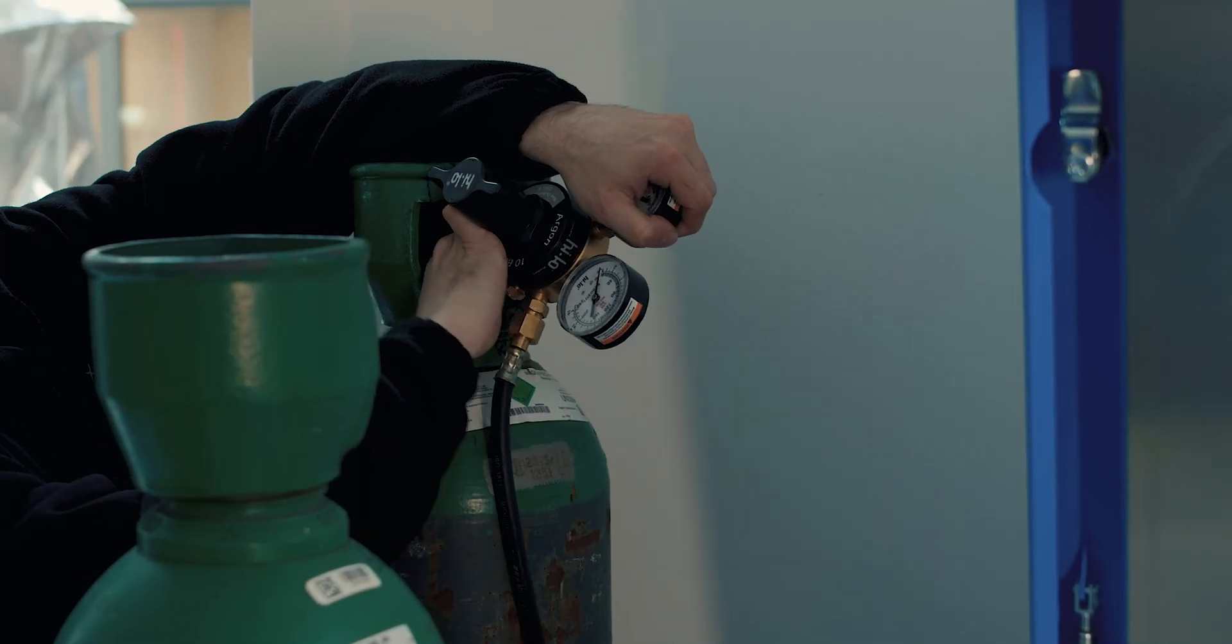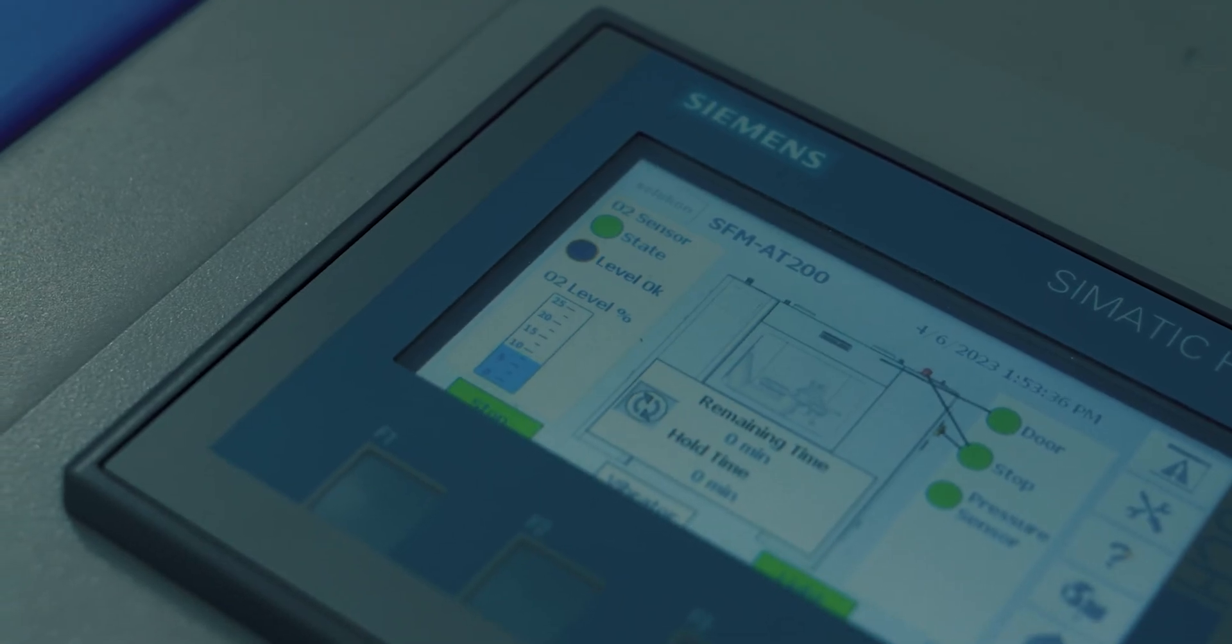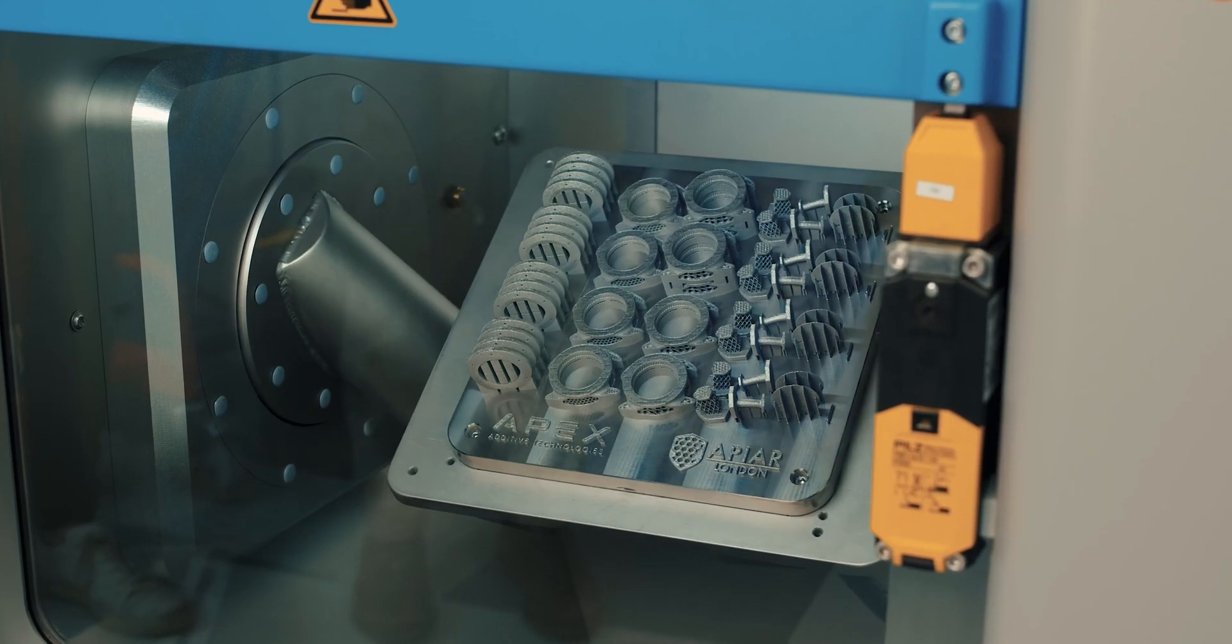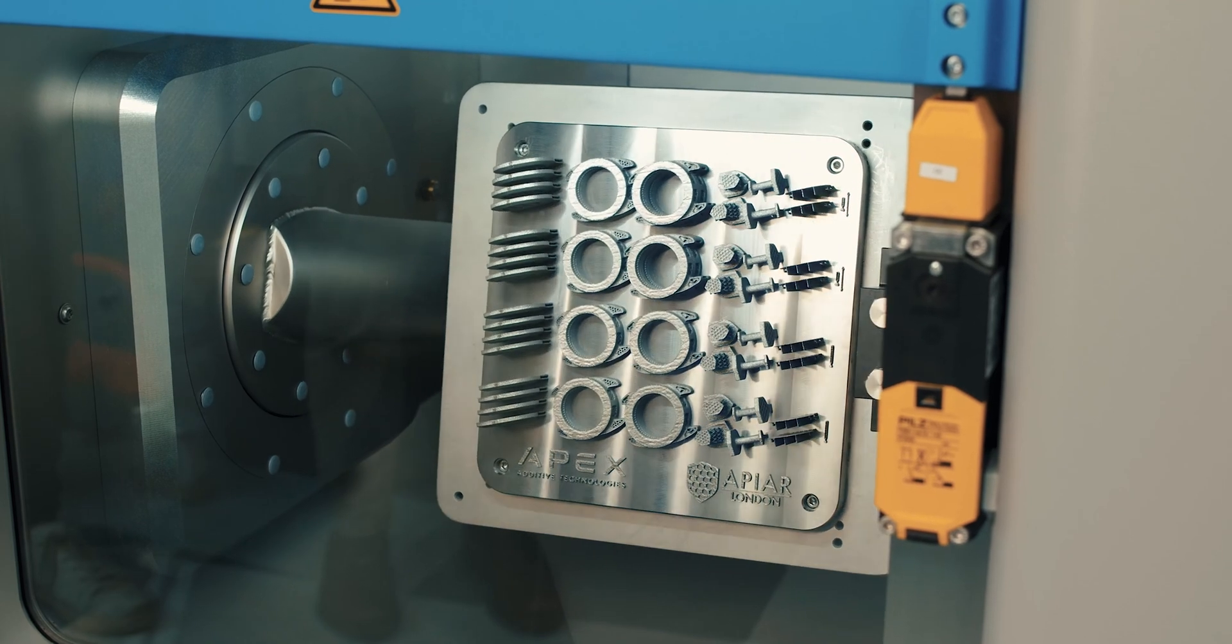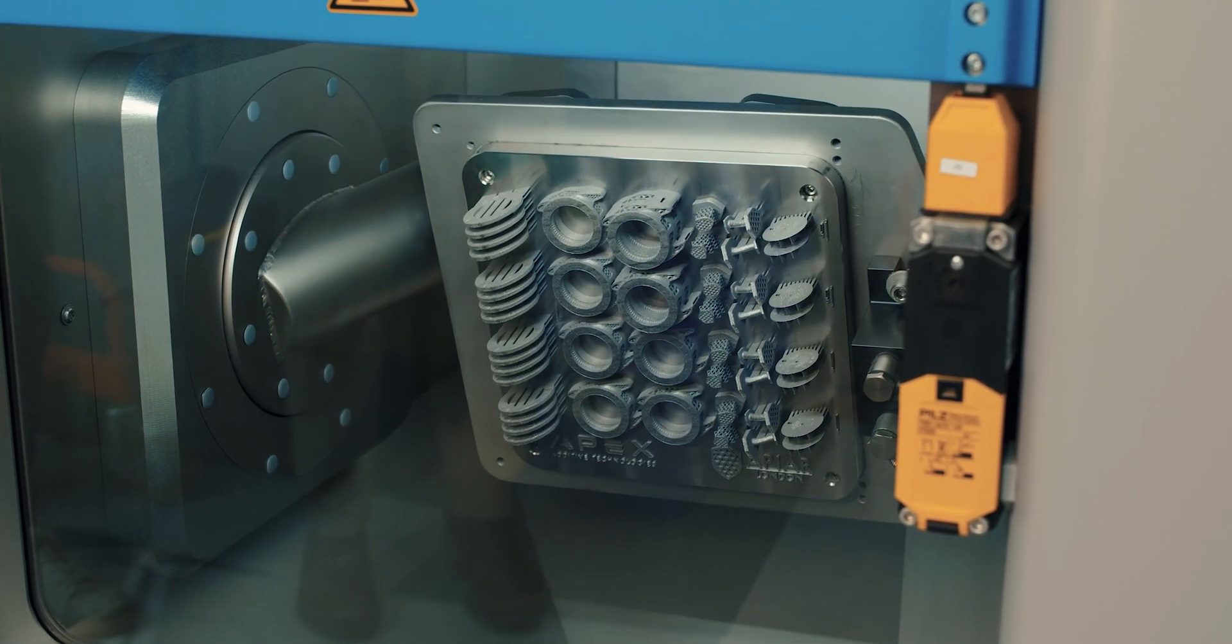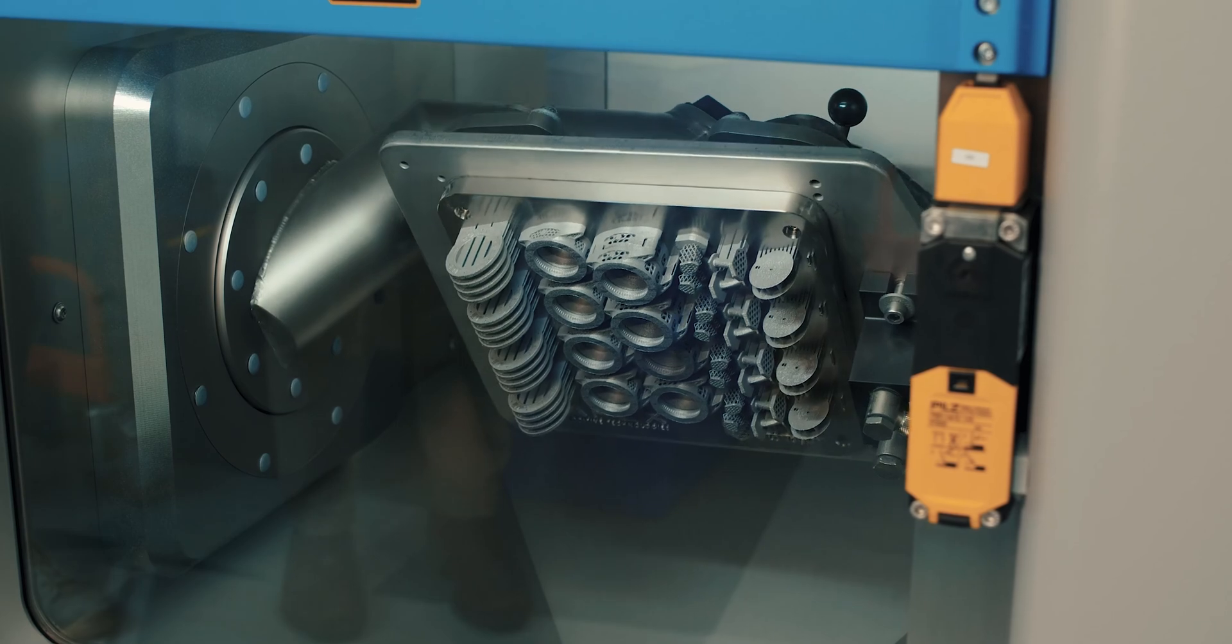So the next stage is to move the build plate onto a machine that will oscillate the build plate at really quite high frequencies whilst rotating it. That will remove any last remnants of metallic powder, leaving your perfectly formed brand new, almost straight from the ashes, metal additively printed part.